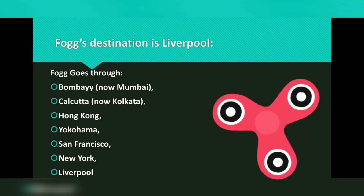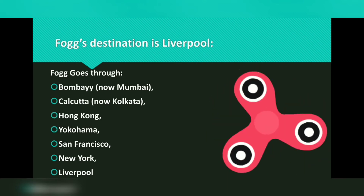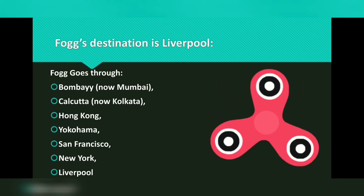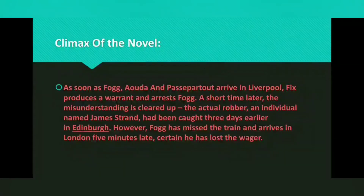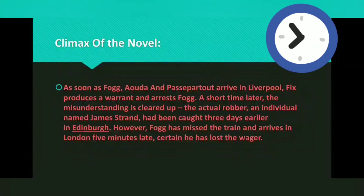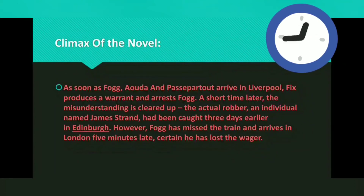Fogg's destination is Liverpool. He goes through Bombay (now called Mumbai), Calcutta (now called Kolkata), Hong Kong, Yokohama, San Francisco, New York, and Liverpool. As soon as Fogg and Passepartout arrive in Liverpool, Fix produces a warrant and arrests Fogg. A short time later the misunderstanding is cleared up — the actual robber, an individual named James Strand, had been caught three days earlier in Edinburgh.